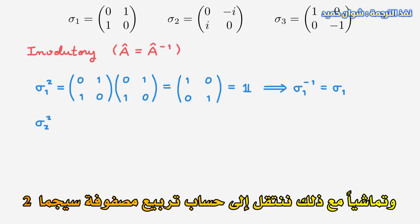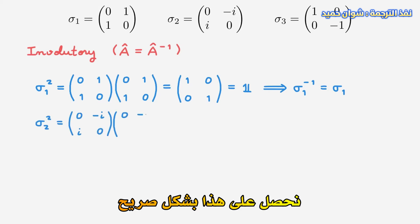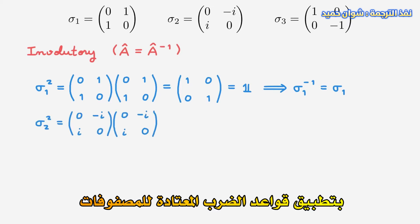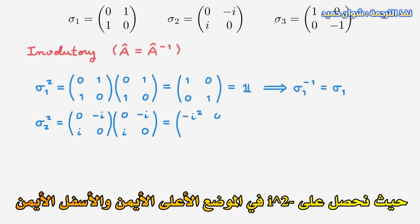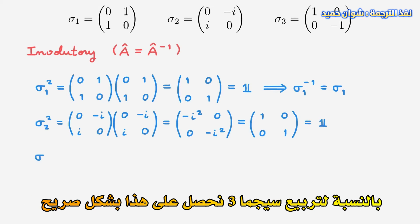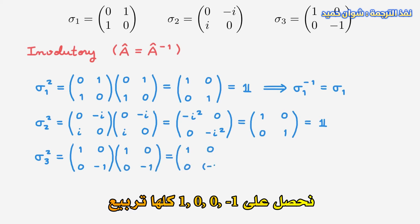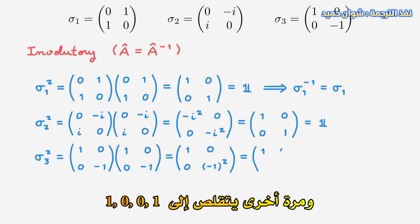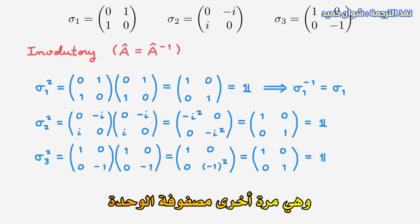Moving on to sigma-2 squared, applying the usual rules of matrix multiplication, we end up with minus i squared on the diagonal entries, which reduces to the identity matrix. For sigma-3 squared, we explicitly get the matrix [1,0; 0,-1] squared, and again that reduces to the identity matrix. These relations confirm that the Pauli matrices are their own inverses, where the subindex k refers to a generic Pauli matrix running from 1 to 3.